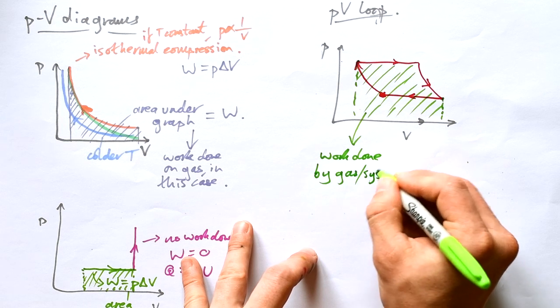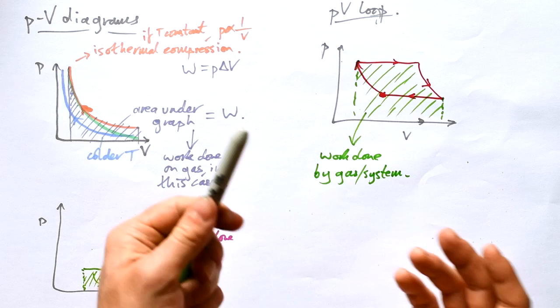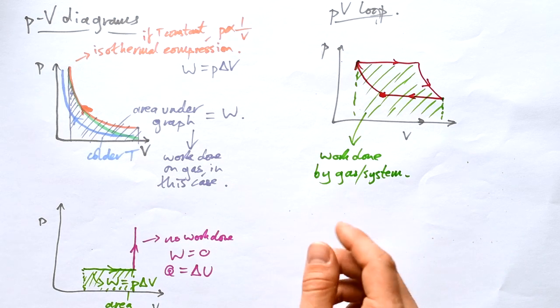So this area under the graph gives you work done by the gas. Okay, we can say a system, but I like to think about it work done by the gas. Don't forget if the volume is increasing, work is done by the gas.